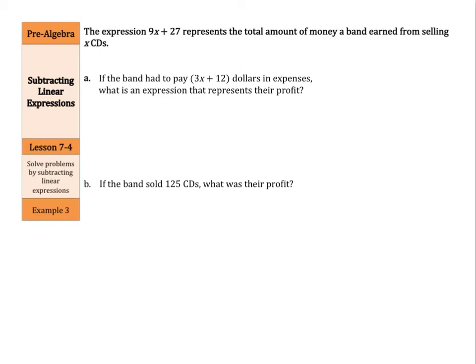Now, lastly, we have solving problems by subtracting linear expressions. Remember, one of our objectives was to solve real-world problems. The expression 9x + 27 represents the total amount of money a band earned from selling x CDs. If the band has to pay 3x + $12 in expenses, what is an expression that represents their profit? Well, this would be their 9x + 27. You have to subtract out your expenses of 3x + 12. Now let's go ahead and solve that, or at least simplify it.